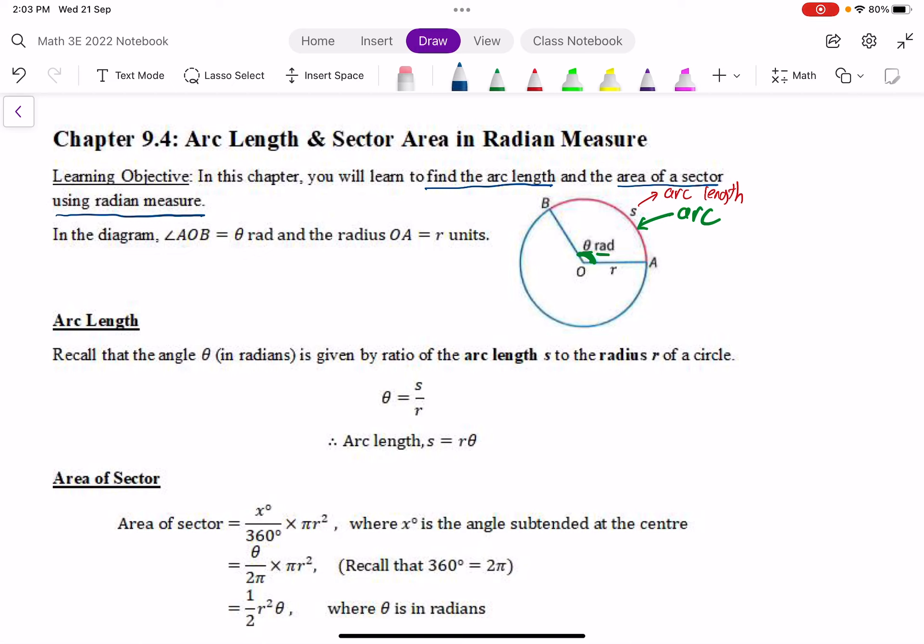Where is the sector? The sector is here. In this sector, you also have the radius to be R units. What we want to do is to find the arc length and the area of the sector if the angle theta is in radians.